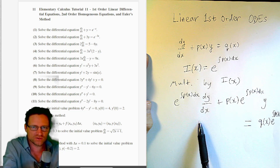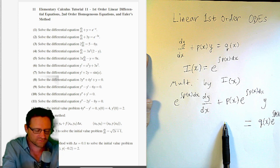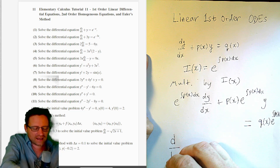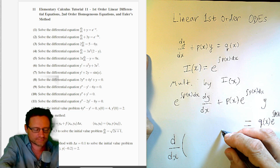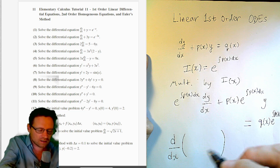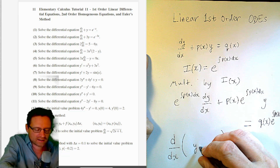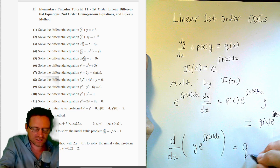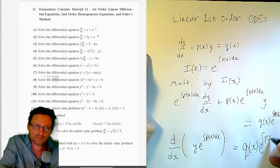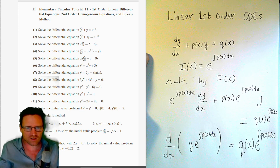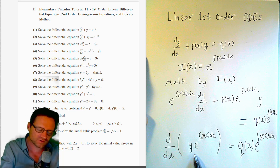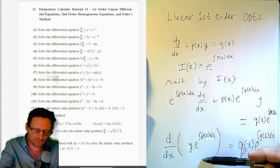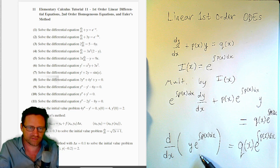The left-hand side packs up using the product rule in reverse to form the derivative of a product: d/dx of y times e to the integral of p(x) dx. If you use the product rule on this expression, you get back exactly the left-hand side. So this is simply the product rule in reverse, compressing the sum into the derivative of a single product.